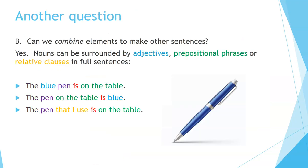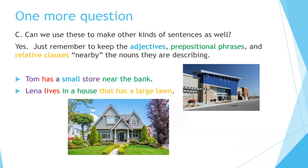Another question: can we combine elements to make other sentences? Yes. Nouns can be surrounded by adjectives, prepositional phrases, or relative clauses in full sentences. For example: the blue pen is on the table. The pen on the table is blue. The pen that I use is on the table. One more question: can we use these to make other kinds of sentences as well? Yes — just remember to keep the adjectives, prepositional phrases, and relative clauses nearby the nouns they are describing. Tom has a small store near the bank. Lena lives in a house that has a large lawn.